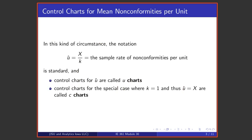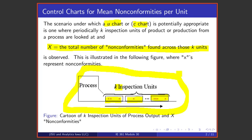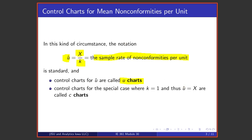In this kind of circumstance, if one takes the total nonconformities seen and divides by the number of units inspected, one gets a kind of rate that is a rate of nonconformities per unit. If one is charting these values u-hat that are x over k, one is making a so-called u-chart. If one is in the special case where there's only one inspection unit at a given period, so k is 1 and that never changes, then that divisor by k doesn't do anything and u-hat is nothing but x and one might call that a c-chart.